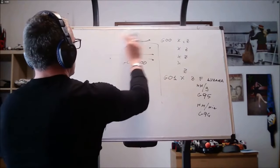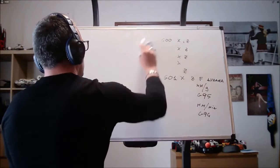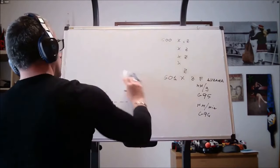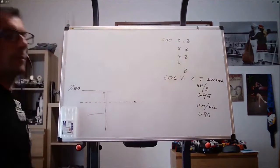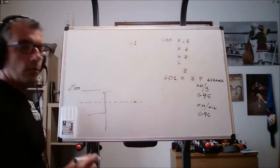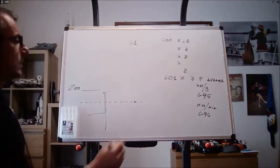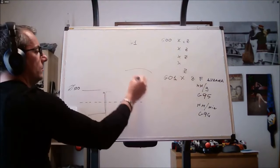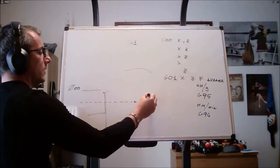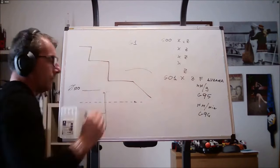When you program in G1, the machine will always move along the shortest trajectory. So it will never do something like this, but it will move like this. Okay.